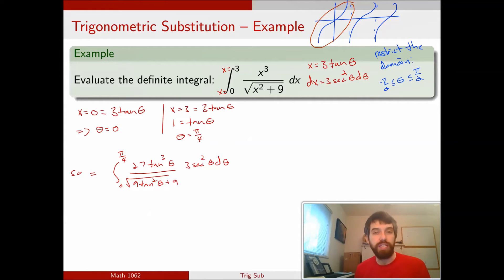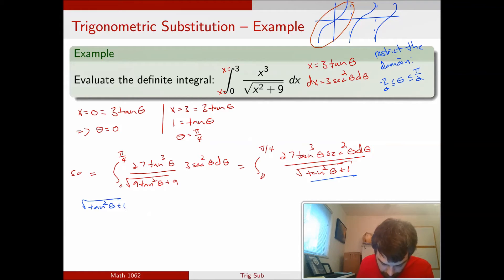Now I want to use the trig identities that I've indicated are going to be important here. On the denominator, I have this 9. I can pull that out. Let me clean it up. Let's write it as 0 to π/4. The 9 comes out, but when it leaves the square root it becomes a 3. The 3 cancels with the 3 I have in the numerator, and that leaves me with 27 tan³ θ sec² θ—there's the 3 I've gotten rid of—dθ all over the square root of tan² θ plus 1. There it is, a little bit cleaner.